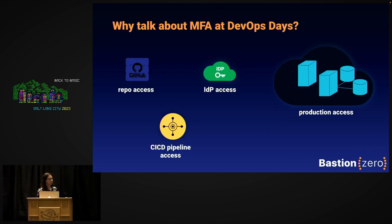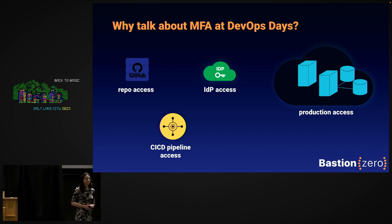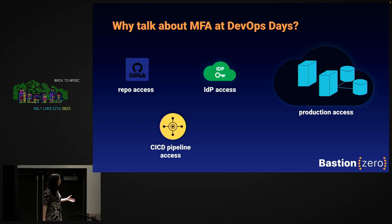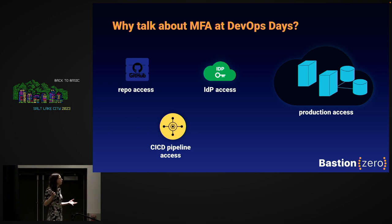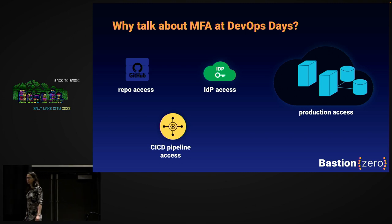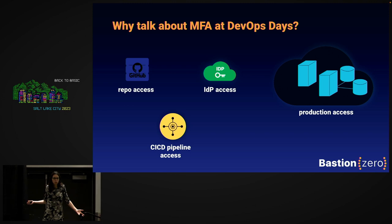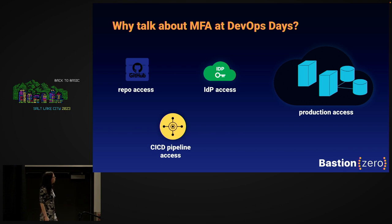I think this group is really well positioned to learn about it. I know you're not cryptographers and infosec people like me, but this community is the one that manages access to very important things — repo access, CI/CD pipelines, your identity provider, production access, who can log into your servers, who can touch your systems. If this stuff gets compromised due to an MFA breach and you're like, well, I had MFA and I don't know why it didn't work — that's not a good position to be in. That's kind of where the tech industry was in 2022. So hopefully in 2023, we do better. That's the goal of this talk.